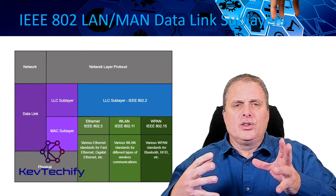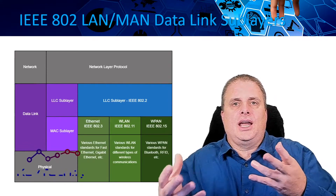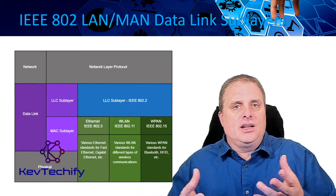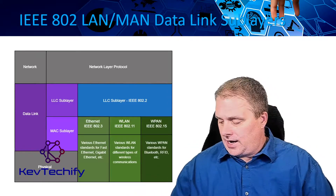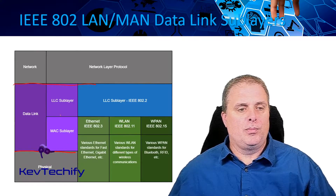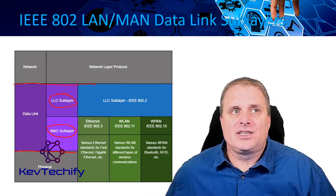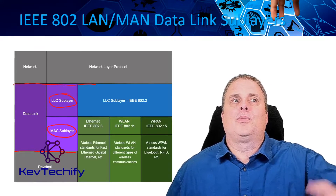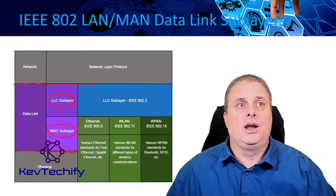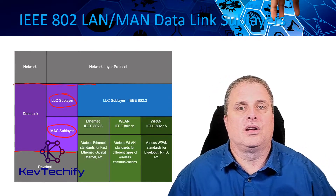There are several different standards, and the different standards sometimes cross Layer 1 and Layer 2 because they have to consider the medium before data is placed on it. When we break down the Datalink layer, there are actually two sublayers: the LLC sublayer and the MAC sublayer. The LLC sublayer communicates between networking software and the upper layers, allowing that communication to happen with whatever is above it.